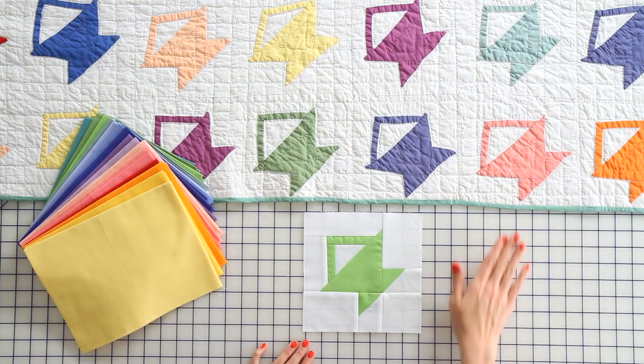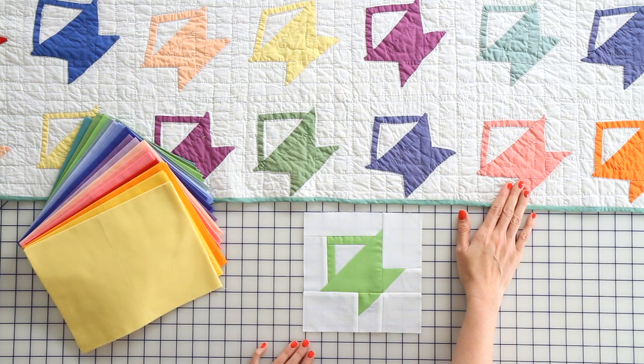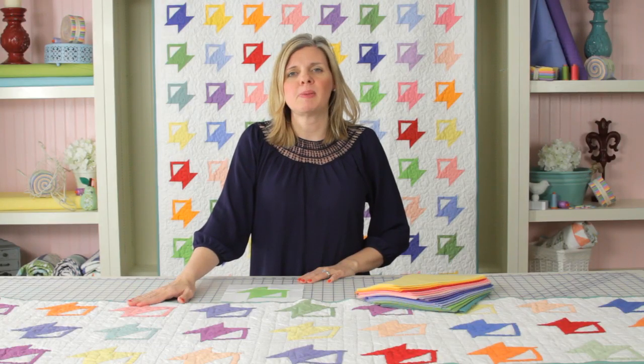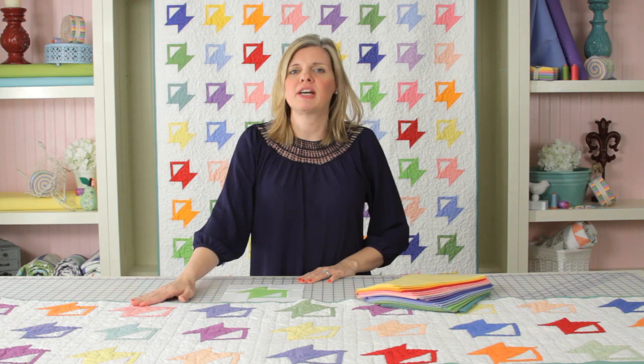We found this lovely antique table runner, and it's got great basket blocks with applique handles. So what we did was we went ahead and converted this into a piece block, so it's going to be a lot easier and faster for you to piece.